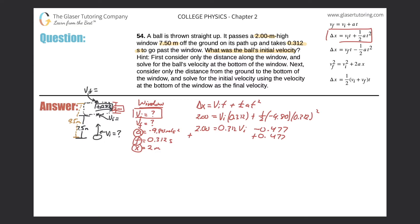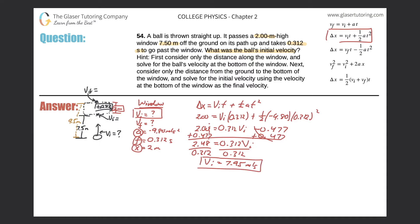Adding 0.477 to both sides gives 2.48 = 0.312 × v_i. Dividing both sides by 0.312, we get v_i equals 2.48 divided by 0.312, which works out to 7.95 meters per second. But that's not the final answer — that's the initial velocity at the bottom of the window, not the velocity at which the ball was originally thrown.